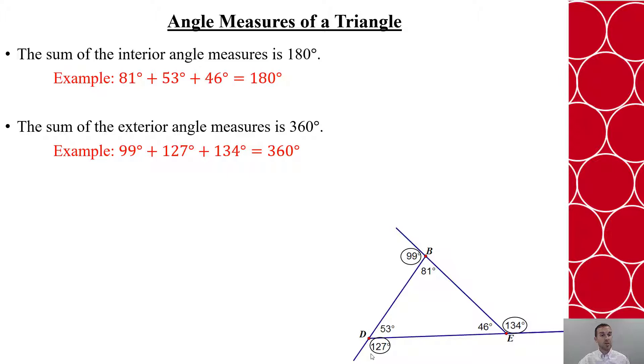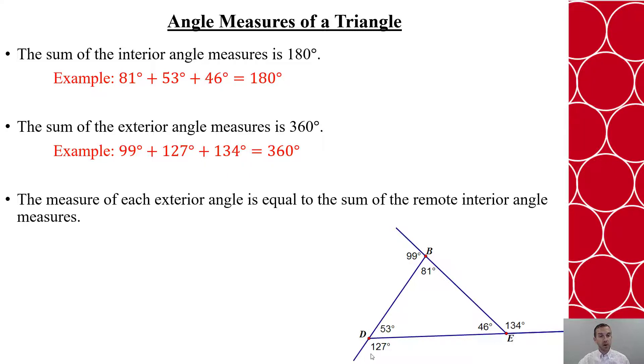And there's a third relationship that is very helpful, which is that the measure of each exterior angle is always equal to the sum of the remote interior angles. So what are the remote interior angles? Let's start with the first one. Say that the 99 degrees, this exterior angle, it's adjacent to 81, so the remote interior are the other two angles inside the triangle. And if I add 53 plus 46, that does equal 99.